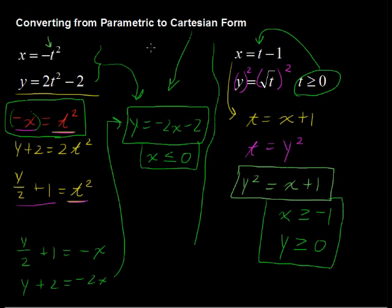So there are a couple of examples of eliminating the parameter, or converting from parametric to Cartesian form, and also remembering to put on the restrictions as we have with some of these problems.